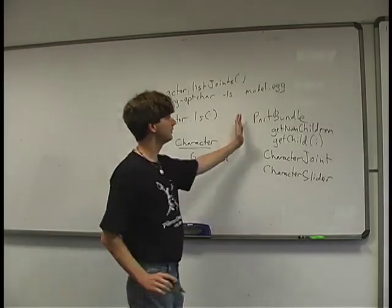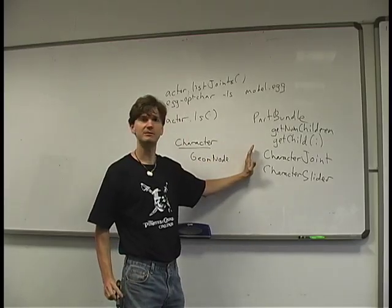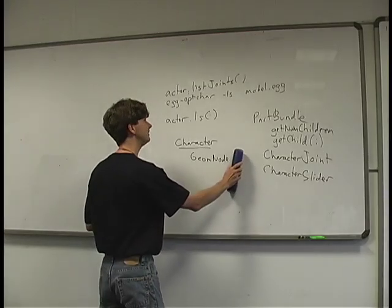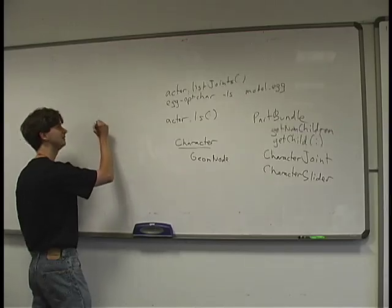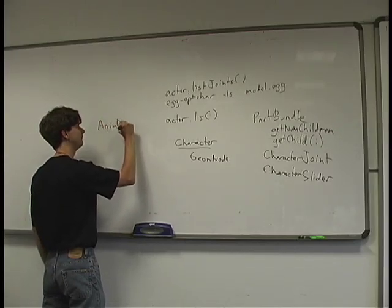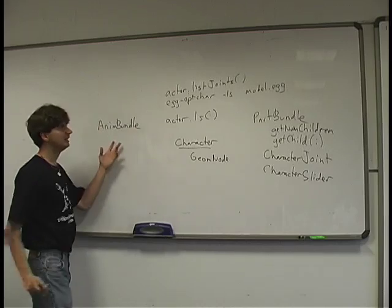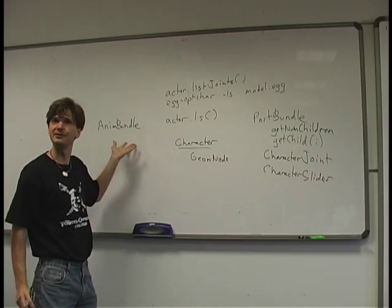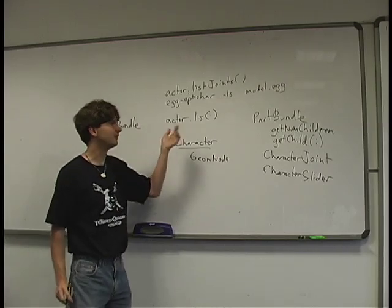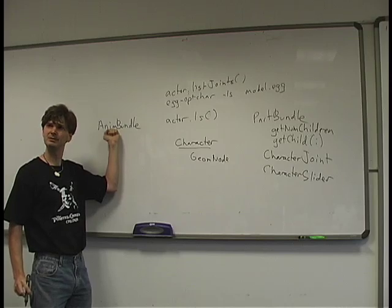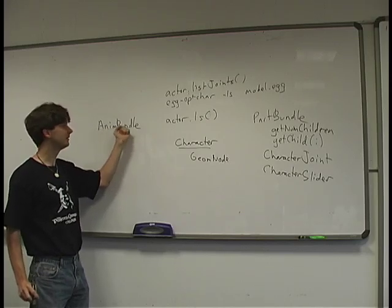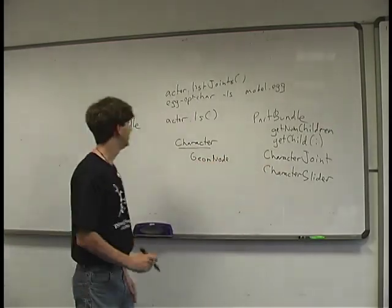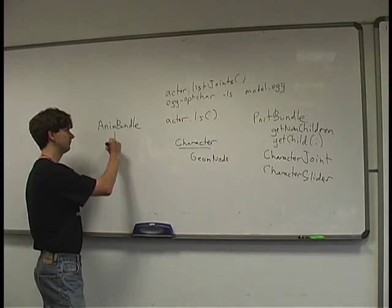This structure inside the PartBundle represents the joint hierarchy of the character. When we load an animation, there'll be a parallel structure of AnimBundles, which is the root of the animation hierarchy. If you load an animation egg file, the first node will be an AnimBundleNode matching the PartBundleNode. You can call getBundle() on it similarly, and then use getChild() to iterate through AnimChannels that store per-frame data.